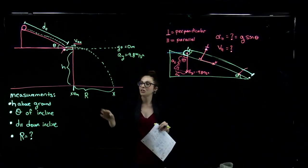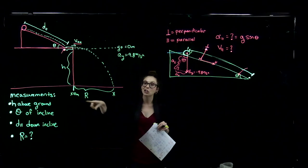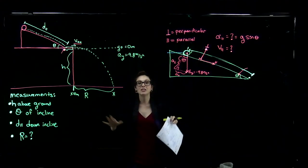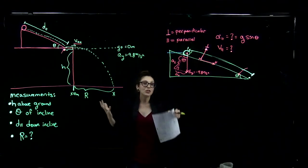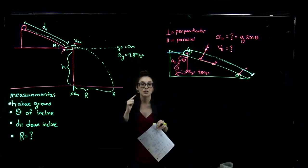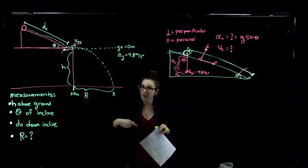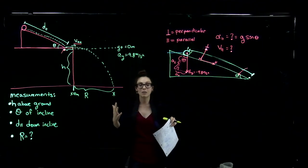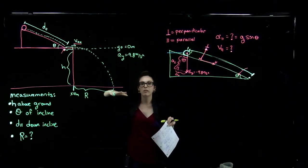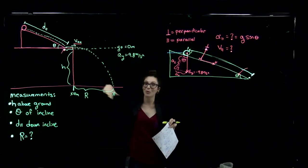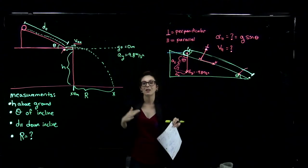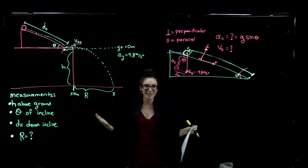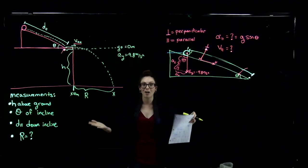From those three pieces of information, you can calculate what the range should be based on these equations. This is making a lot of assumptions — we're assuming there's no friction, no energy lost because our ball is rolling down the plane rather than just sliding down. We're also going to lose energy because the ball might roll down a bouncy path as it goes down since our cardboard isn't perfectly straight. There's going to be a large margin of error in this experiment.